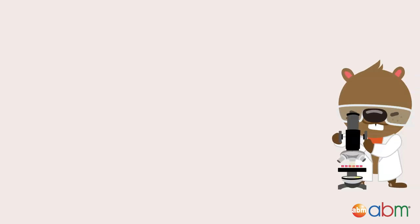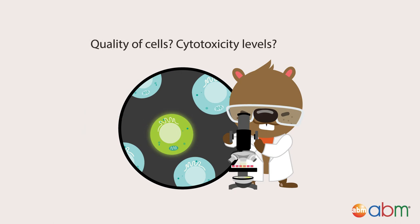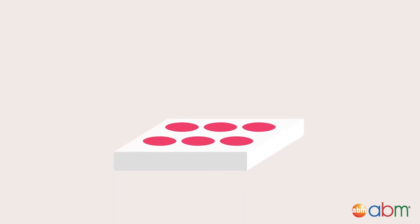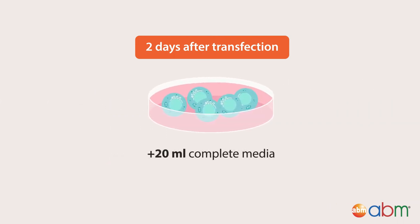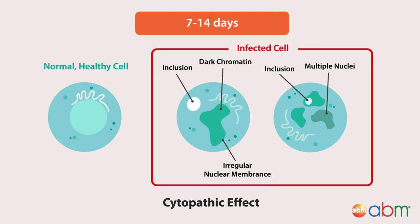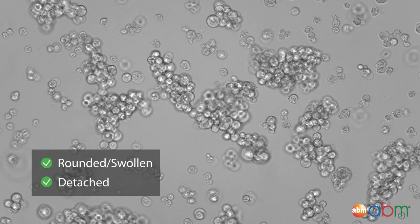If a fluorescent marker was used, you will be able to observe the fluorescent signals 24 hours post-transfection. Examine your cells under the microscope and note the quality of cells and cytotoxicity levels. Your transfected cells should reach 80% confluency approximately 2 days after transfection.